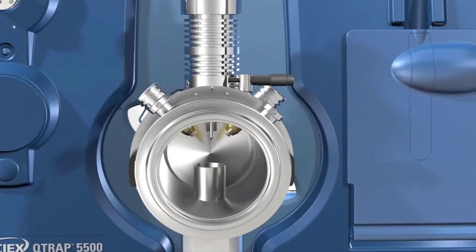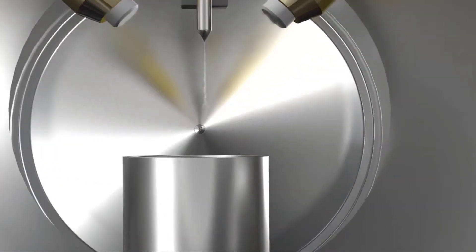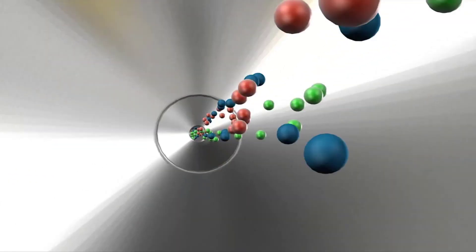In the ion source, the sample is converted into charged particles called ions in the gas phase. The most common example is electrospray ionization. From there, the ions enter the mass analyzer.